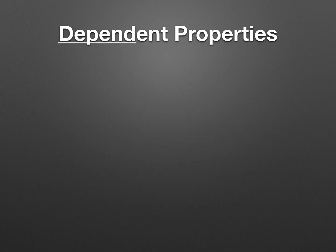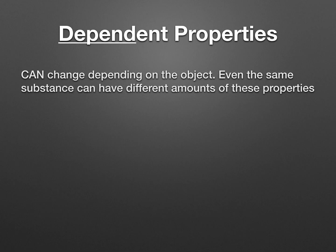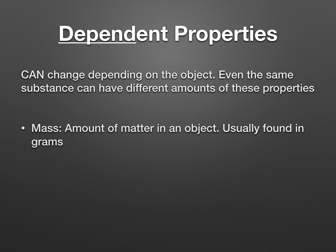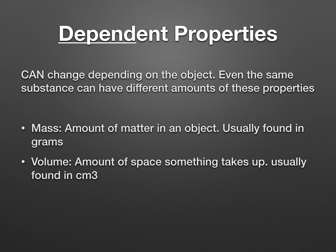The next type is dependent properties — I underline the word 'depend' because it depends on the object. This can change depending on the object, even if the substance is the same. Mass is the first: it's the amount of matter in an object, usually measured in grams. Volume is the amount of space something takes up, usually found in centimeters cubed. Shape — self-explanatory, what shape it looks like. And color, another self-explanatory property.